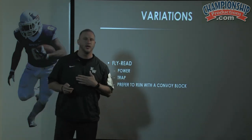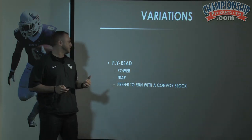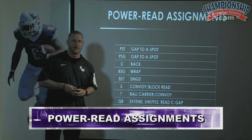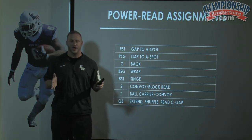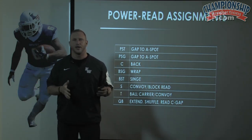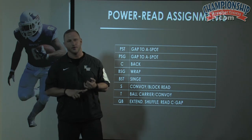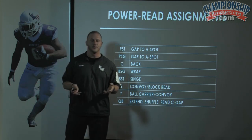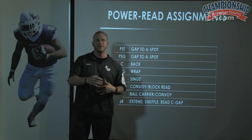We prefer to run this with what we call a convoy block as opposed to naked, which I will explain thoroughly. When we run our power read assignments, we're taking our fullback out of the interior run concept and making him a convoy block — accounting for that sixth defender by reading that person instead of blocking him. Maybe the guy's a really good player, maybe the situation calls for putting the ball on the edge versus inside, maybe you want to run your quarterback, or you're getting a lot of movement out of certain people. There are a lot of reasons to do that.